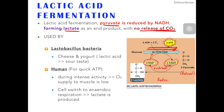Our muscle cells also switch to lactic acid fermentation when the oxygen supply to the muscle is low. For example, when you do intense activity and use a lot of your muscles, the amount of oxygen supplied to the muscle is low, so our muscle cells will switch from aerobic respiration to anaerobic respiration.